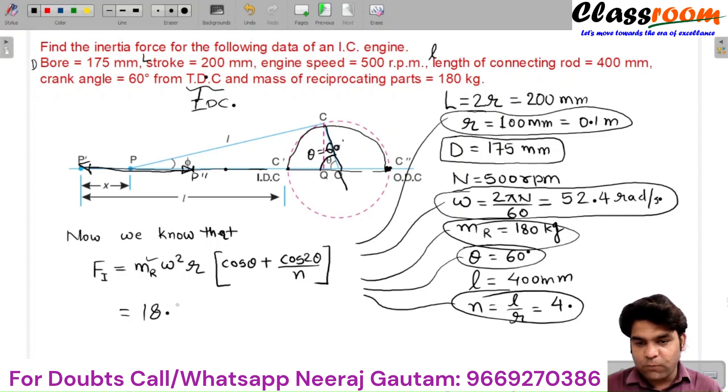that the inertial forces are 18.53 kilo Newton. Do the calculations by your own. Okay. This is our final answer of this problem.